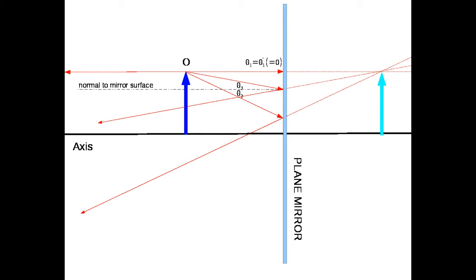A third ray comes off the top of the dark blue arrow and strikes a point on the mirror very close to the optical axis. According to the law of reflection, it reflects away at the same angle with respect to the normal as the incident ray, and we see that this one diverges even further away from the second and first reflected rays. On our side of the mirror, according to this geometric picture of optics, the reflected rays do not converge at a point.